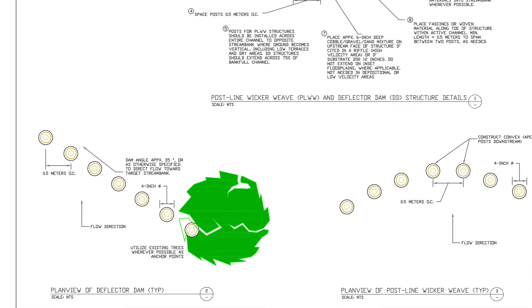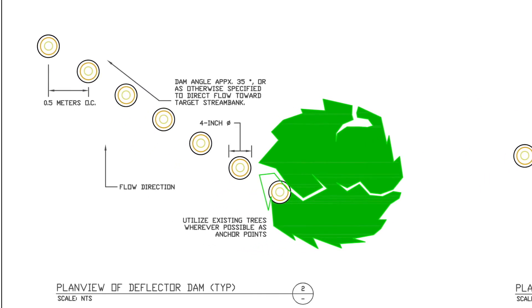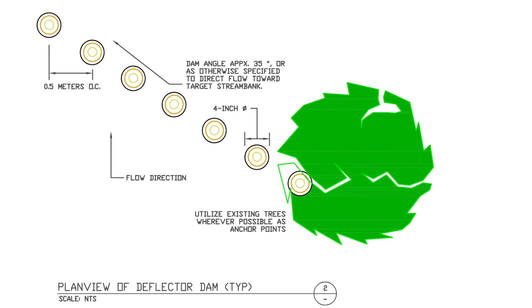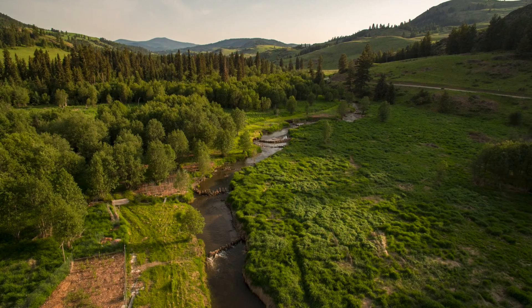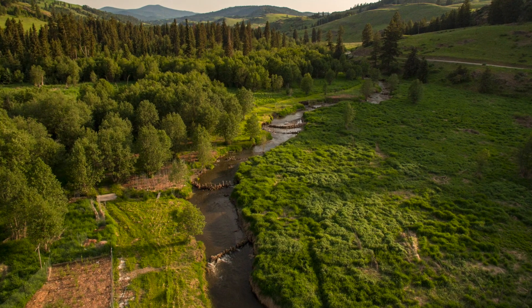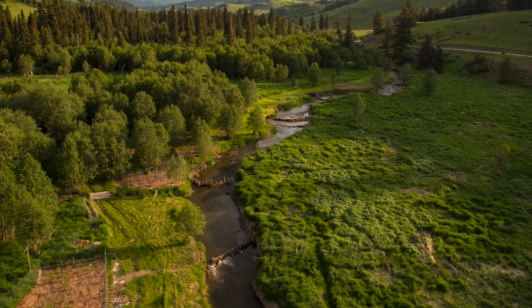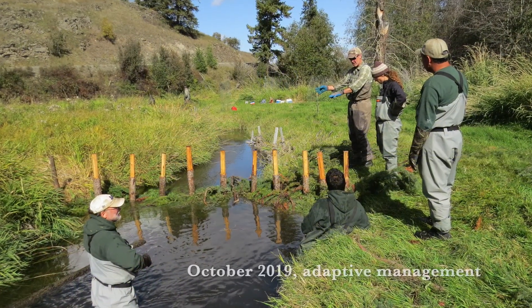The idea is to essentially steer that low flow and direct it into the bank. These do not span all the way across the channel — they generally are about 75% of the active channel width, or bank-full channel width. They're generally done in concert with a downstream full channel-spanning structure tied into the banks on either side.